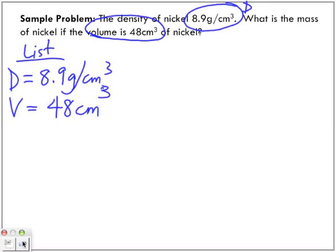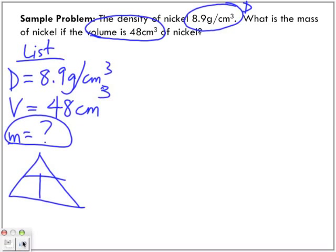Doesn't matter the order that you put them. It's also really important to make sure you include what you're trying to find. Because when we go to the pyramid, the one that you label with your question mark, that is the letter we are crossing out. So we're trying to find M, cross out M in your pyramid. We have D next to V. So what we were trying to find, mass, is equal to density times volume.